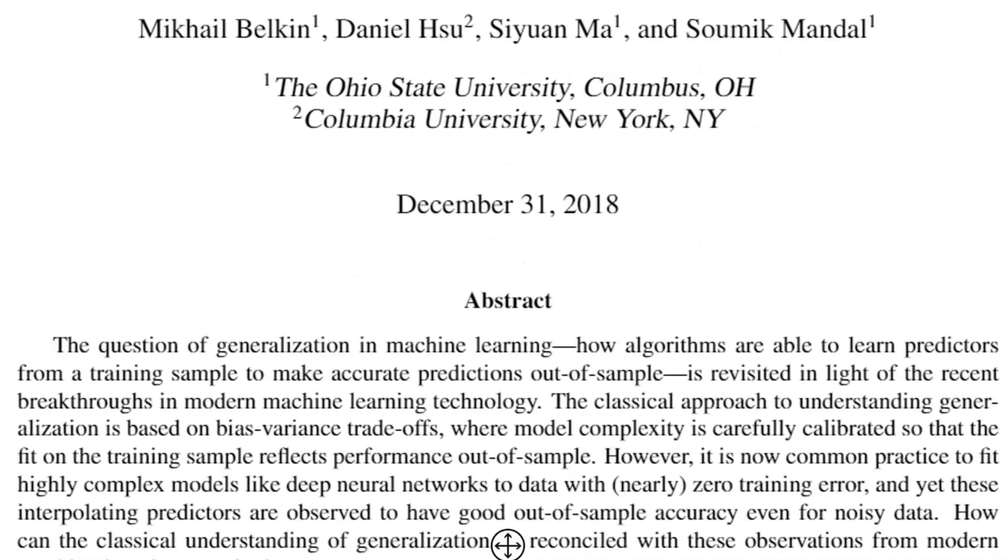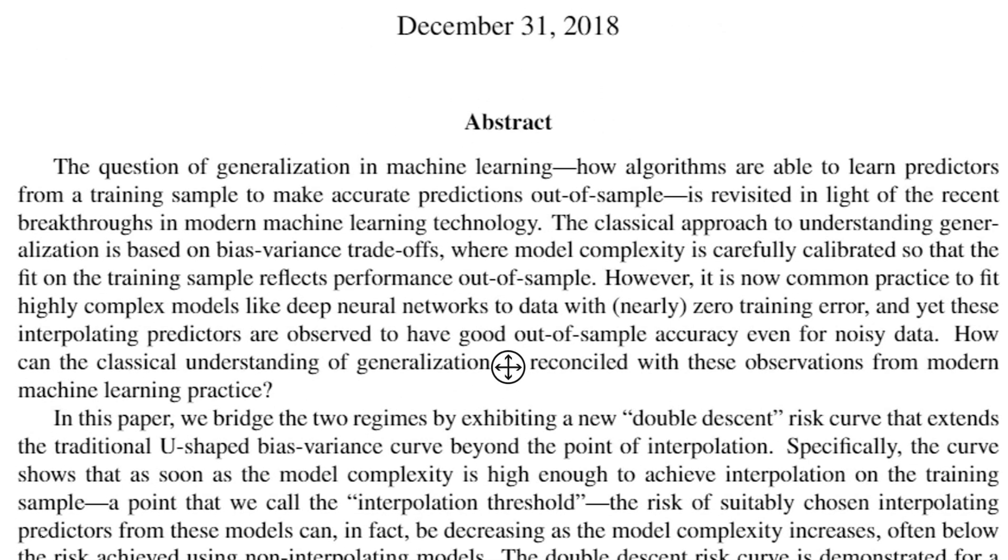So what's the problem? The problem is they contrast what they call classical machine learning and how to understand machine learning, namely in terms of bias-variance trade-offs, and modern machine learning where it's, for example, deep neural networks which have very different properties.